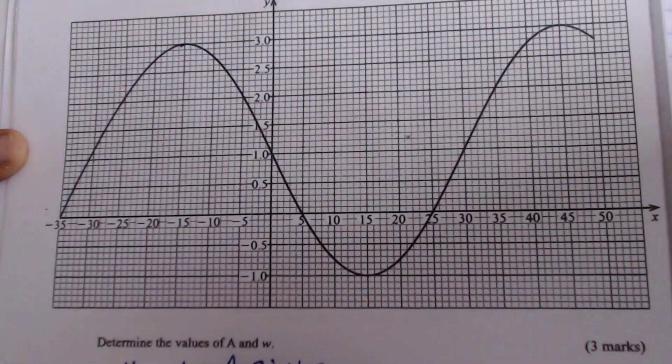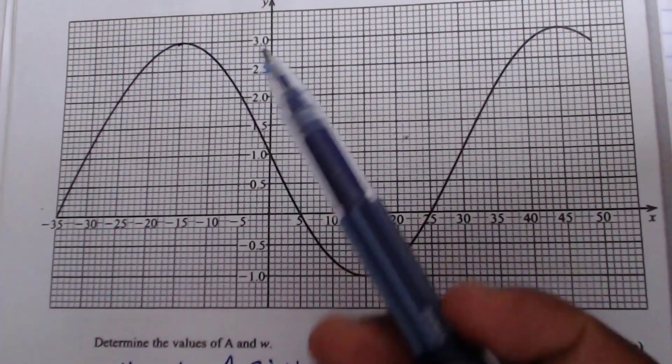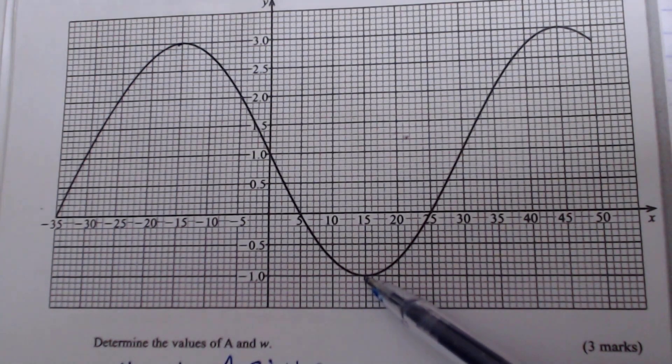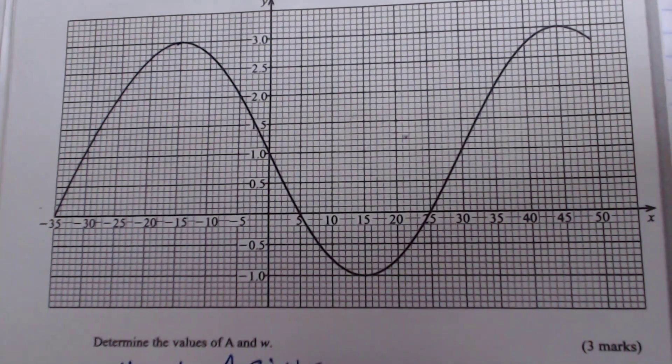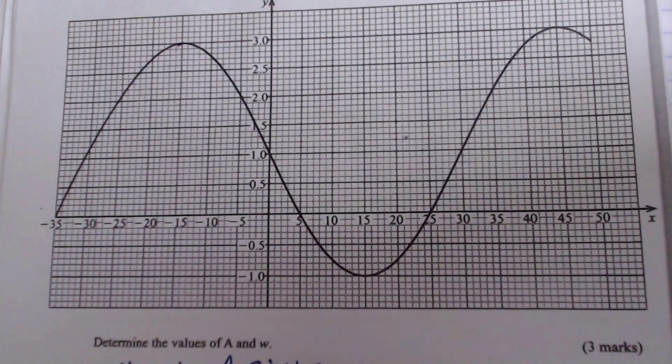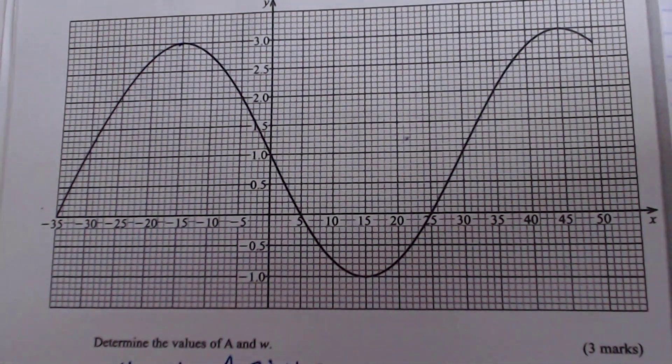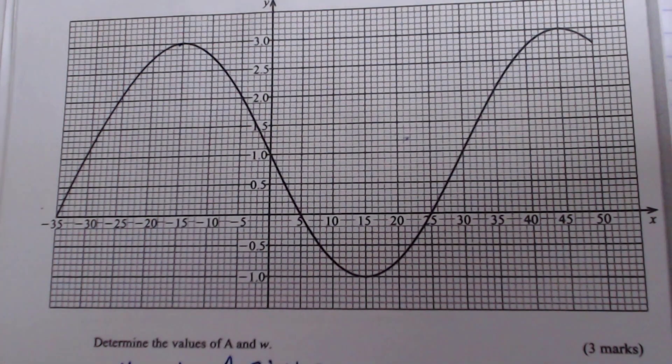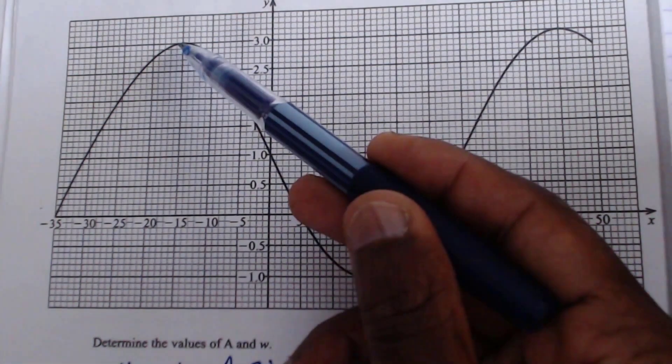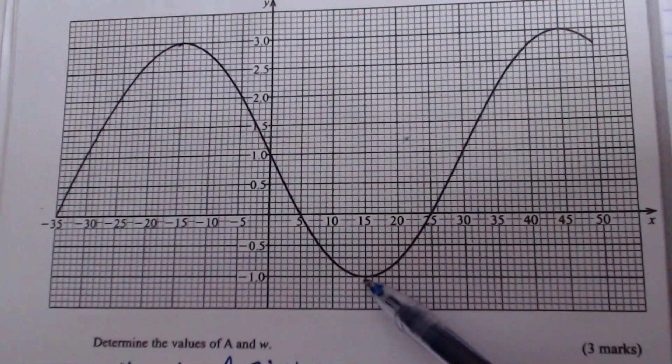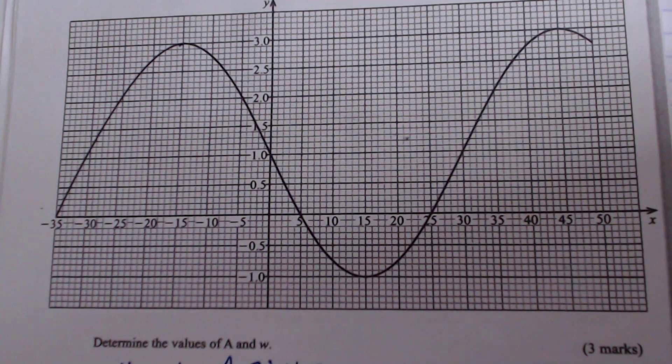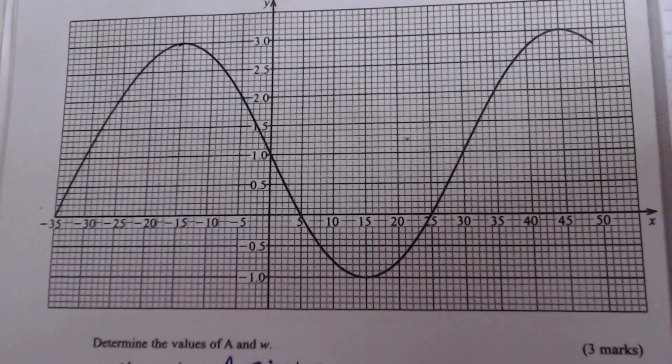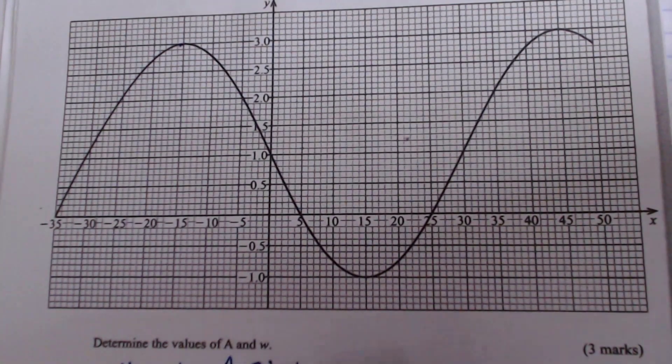So this is how we get a: 3, then subtract the lowest point of that curve. The lowest point of that curve is here, negative 1. So get the difference and then divide that by 2. It's the best way you can get the amplitude of this curve. This will give 4 divided by 2, and the value of a will be 2.